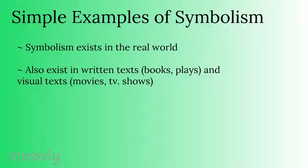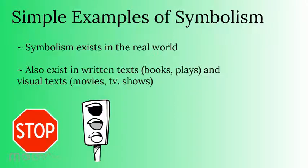Symbolism exists everywhere in the real world if you know how to look for it. Some simple examples are stop signs or traffic lights — these tell us in cars that we need to stop. You're probably using symbolism a lot when you're messaging friends. When you send a smiley face, it means you're happy; when you send a frowning face, it means you're sad or upset. Symbolism similarly exists in written texts like plays and books, and also in visual texts like movies and TV shows.